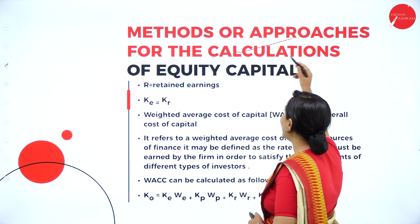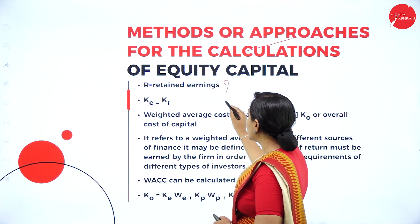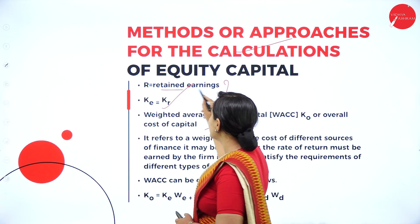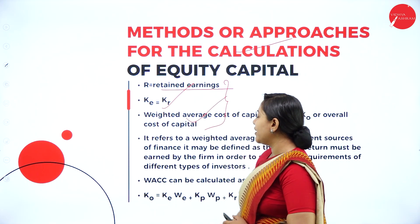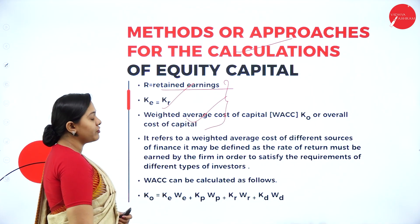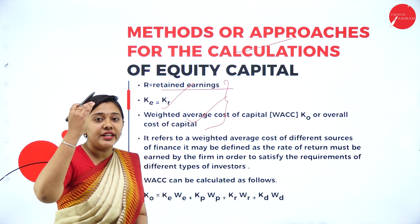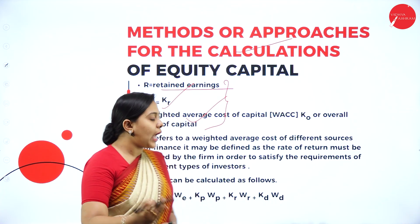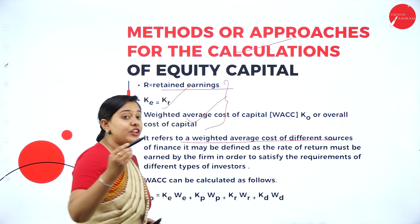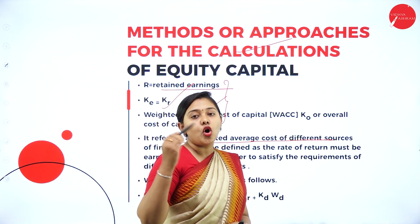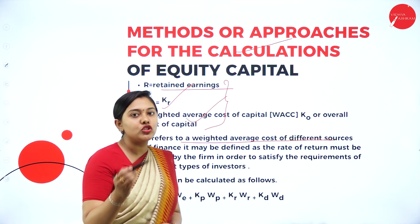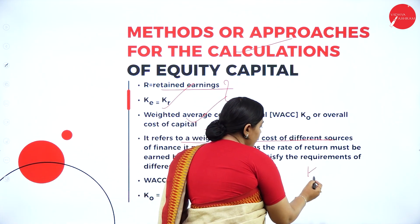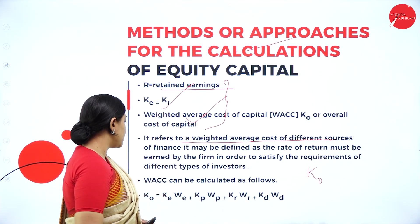Cost of equity equals cost of retained earnings. Next, we have the weighted average cost of capital, which is the overall cost of capital. It is the summation or average of all specific costs — cost of equity, cost of preference, cost of debt, and cost of retained earnings. Together, their summation is called overall cost of capital, symbolically represented as K₀.